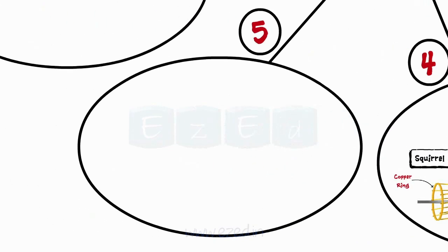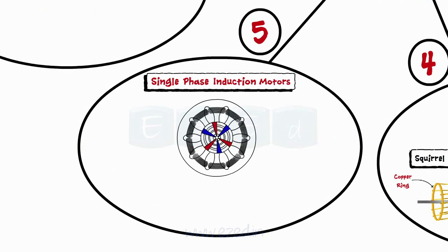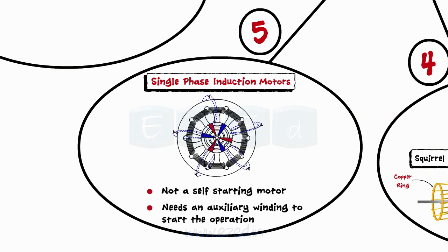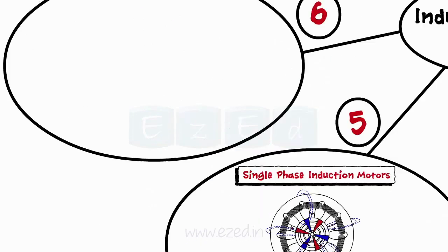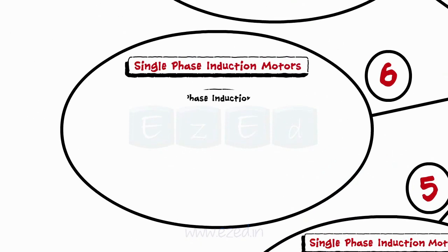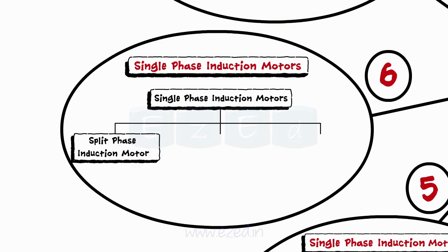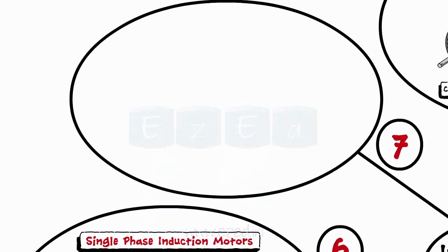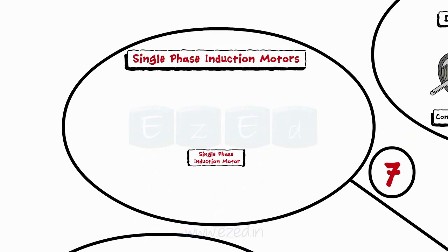Single phase induction motor also has two main parts: stator and rotor. It is not a self starting motor and needs an auxiliary winding to start the operation. There are three types of single phase induction motors: split phase motor, capacitor start motor, and shaded pole induction motor. The common applications of induction motor are fans, washing machines, hair dryers, toys, etc.